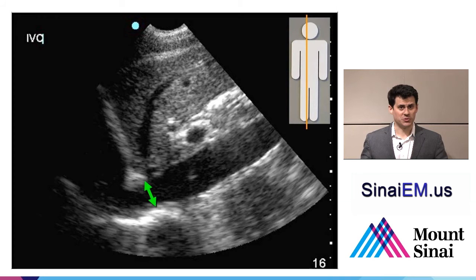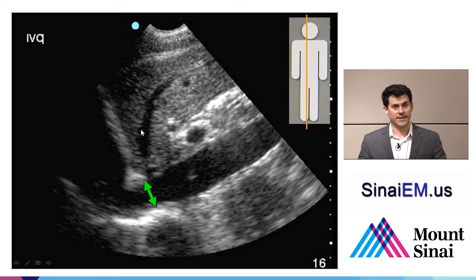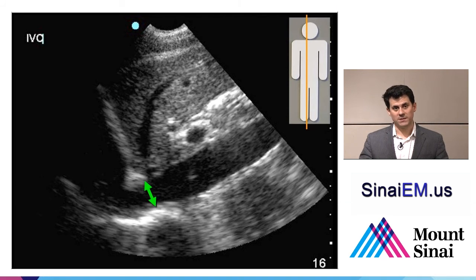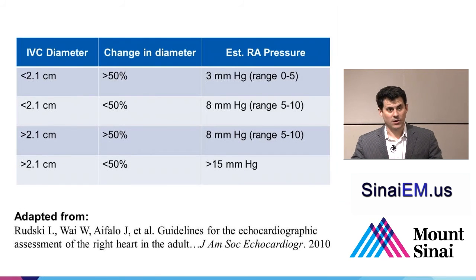More typically, people use a longitudinal view. Find the transverse view, bring the IVC to the middle of your screen, then rotate 90 degrees with the probe marker facing the patient's head. You'll see the liver in the near field, a hepatic vein draining into the IVC, and the right atrium up here. Another way: locate a sub-xiphoid cardiac view, focus on the right atrium, and trace it inferiorly until it opens into the IVC. At the level of the confluence of the hepatic veins, just distal to the right atrium — that's where to measure the diameter.